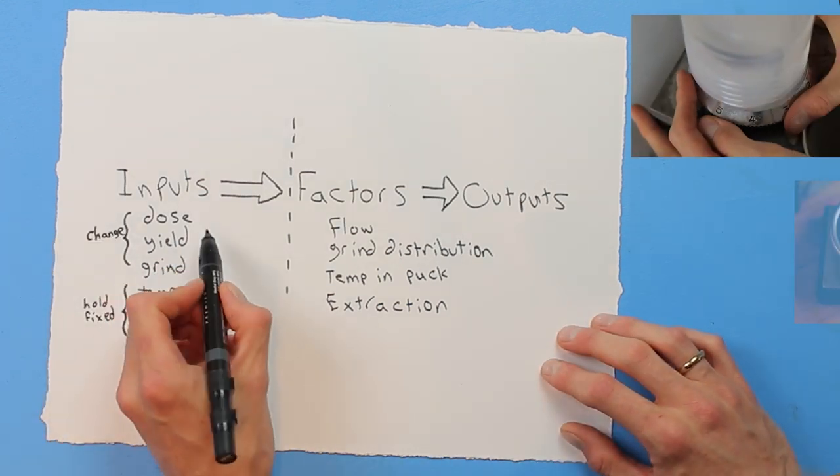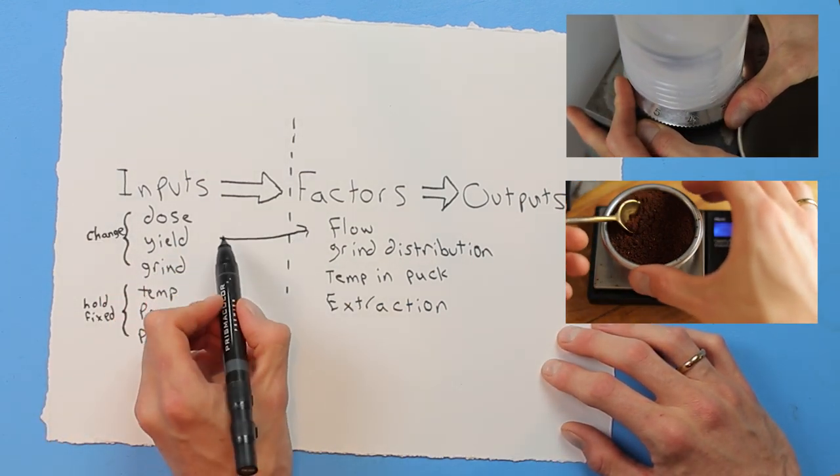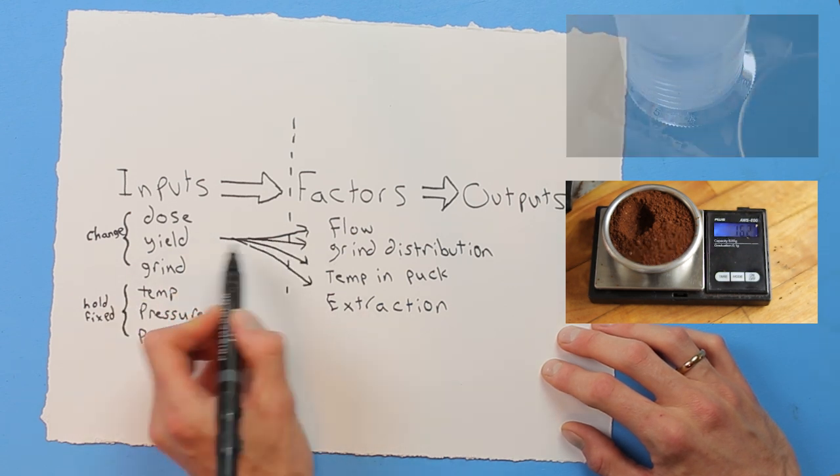It helps to keep most of the inputs fixed while allowing a smaller subset of them to change—usually the inputs we change are the one or two on which we have the greatest control and which have the most predictable effect on water flow and extraction.